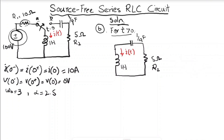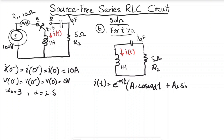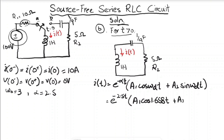Since the response is underdamped, the general solution is: i(t) = e^(-alpha·t) [a1·cos(omega_d·t) + a2·sin(omega_d·t)]. Substituting values: i(t) = e^(-2.5t) [a1·cos(1.658t) + a2·sin(1.658t)], where omega_d = 1.658 rad/s.